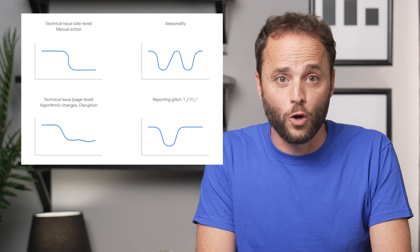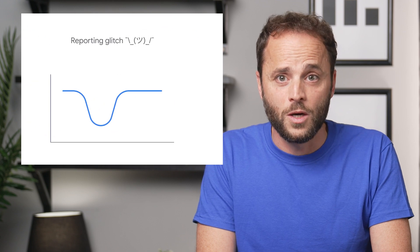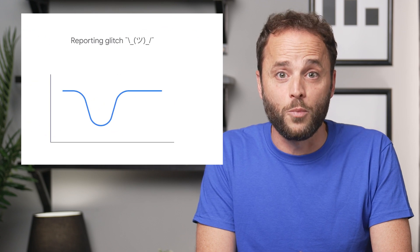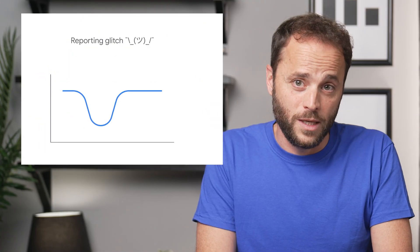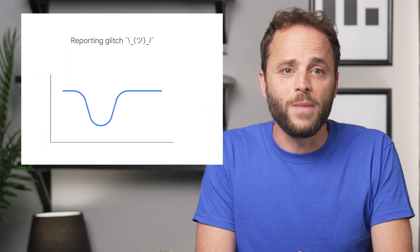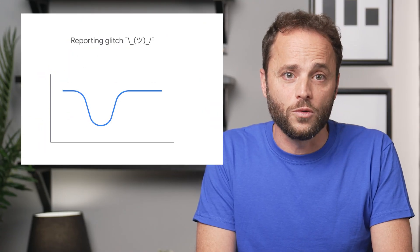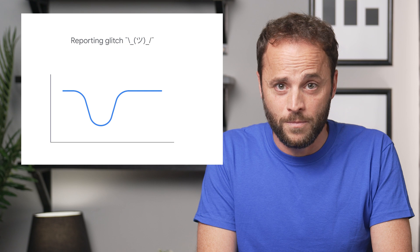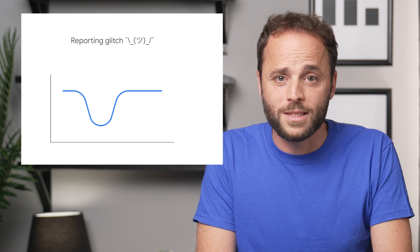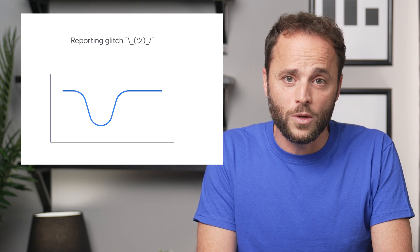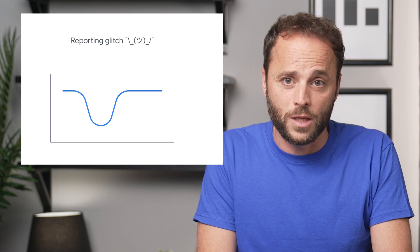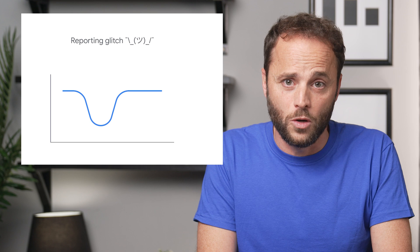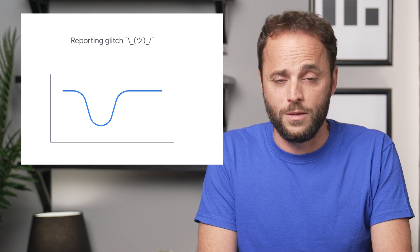In the bottom right chart, we can see reporting glitches. Usually, if you see a major change followed immediately by a return to the norm, it could be a simple glitch. We usually add chart annotations to let you know when it happens.